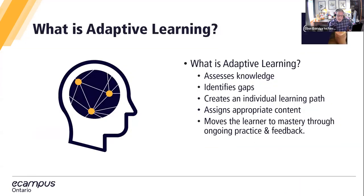To provide a bit of context, adaptive learning platforms are educational technologies that assess a learner's knowledge, identify skills gaps, and provide a personalized instructional path towards learning outcomes. Overlapping with adaptive learning are other technologies such as artificial intelligence, machine learning, and intelligent tutoring systems. Often experiential in nature, these technologies are grounded in competency-based instruction and move the learner towards mastery through ongoing practice and immediate feedback. Among the many benefits, these technologies have been shown to improve learning efficiency, knowledge transfer, and learner engagement.